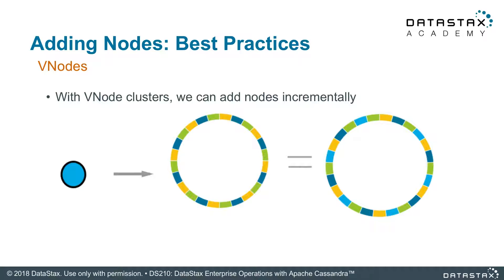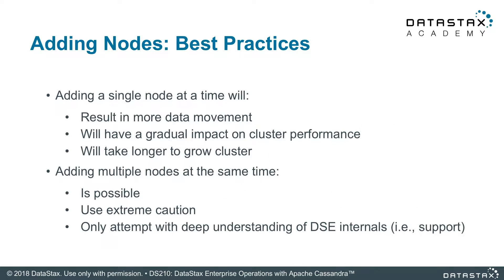With vnodes — virtual nodes — you can add more capacity incrementally because the node count is spread incrementally across all of the nodes. Each node stores many token ranges. When you add a new physical server, it spreads those ranges amongst the cluster so the token ring grows without having to worry about doubling it. Adding a single node at a time incrementally adds capacity in a controlled fashion.